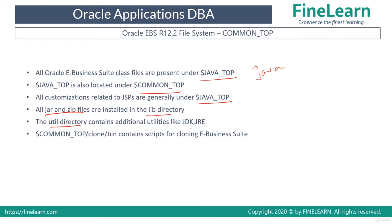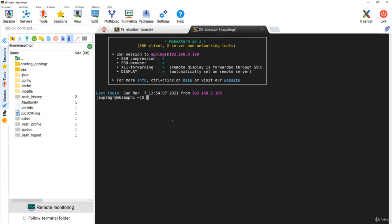Additionally, the util directory under Common Top contains the JDK and JRE. One of the most important things is that under Common Top you also see a clone directory, and that clone directory contains the scripts to clone Oracle EBS suite.